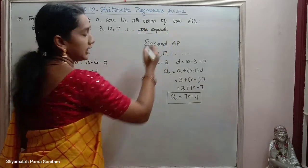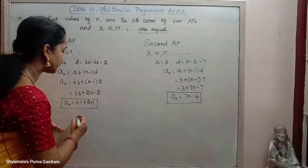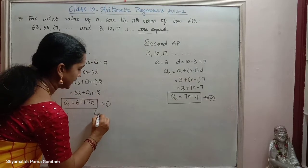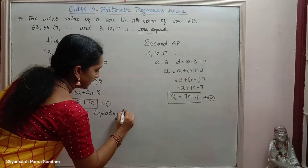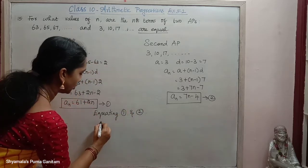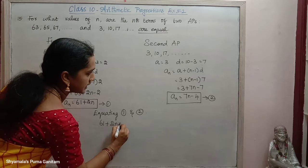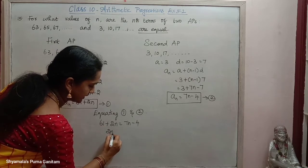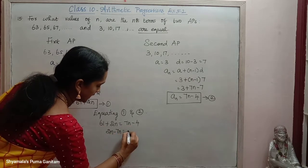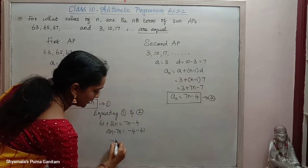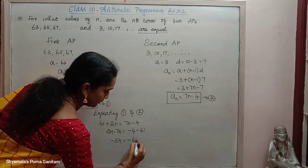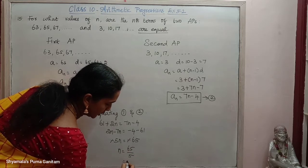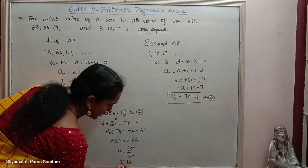Since both ANs are equal, we equate them: 61 plus 2N equals 7N minus 4. Bringing N terms to one side: 2N minus 7N equals minus 4 minus 61, so minus 5N equals minus 65. The minus cancels, giving N equals 65 by 5, that is equal to 13.